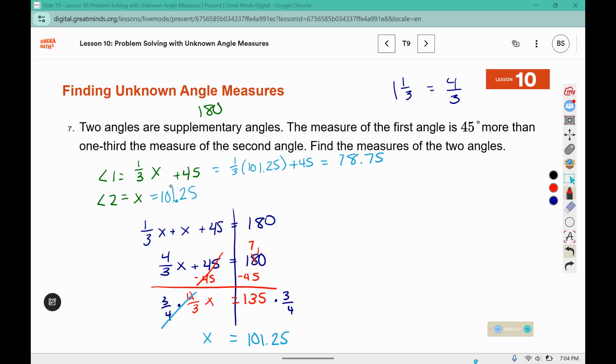And if we check our work, when we add these two values together, we should end up with 180. 5 plus 5 is 10, 7 plus 2 plus 1 is 10, 8 plus 1 plus 1 is 10, 7 plus 0 plus 1 is 8. So yes, we did get 180. So angle 1 is 78.75 degrees and angle 2 is 101.25 degrees.